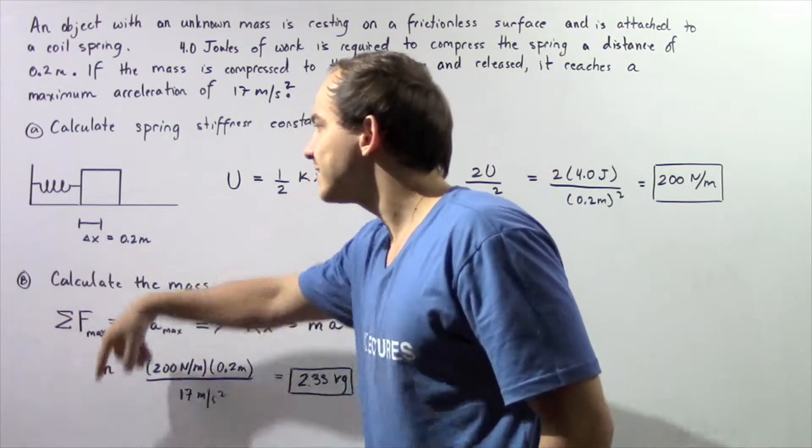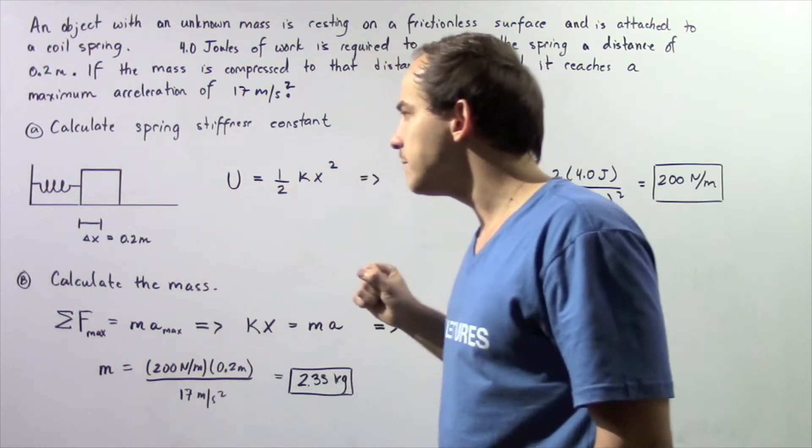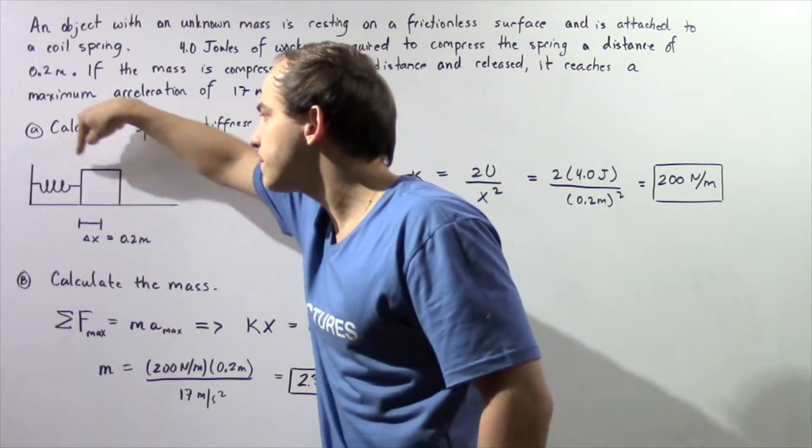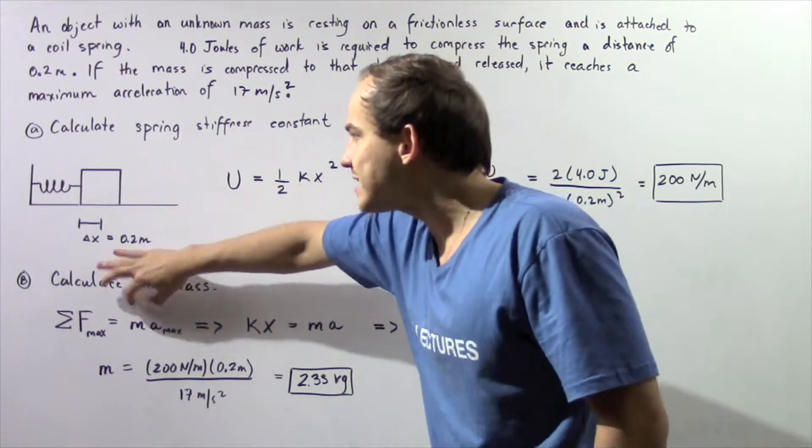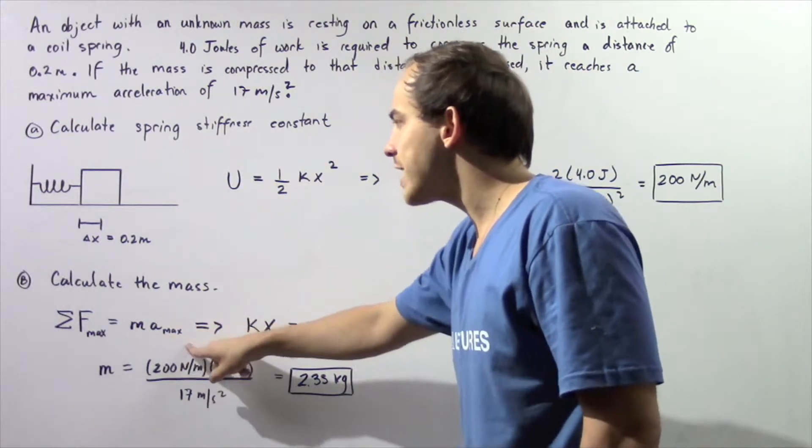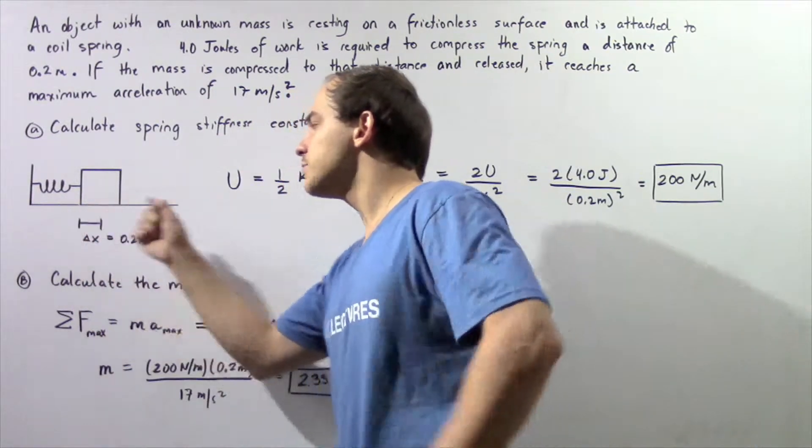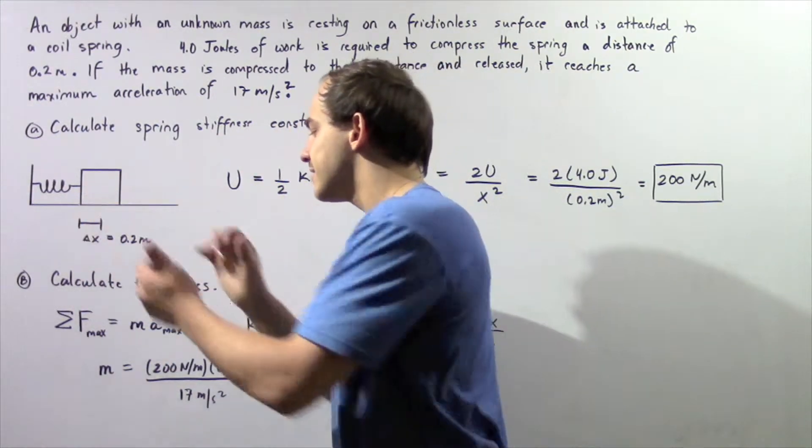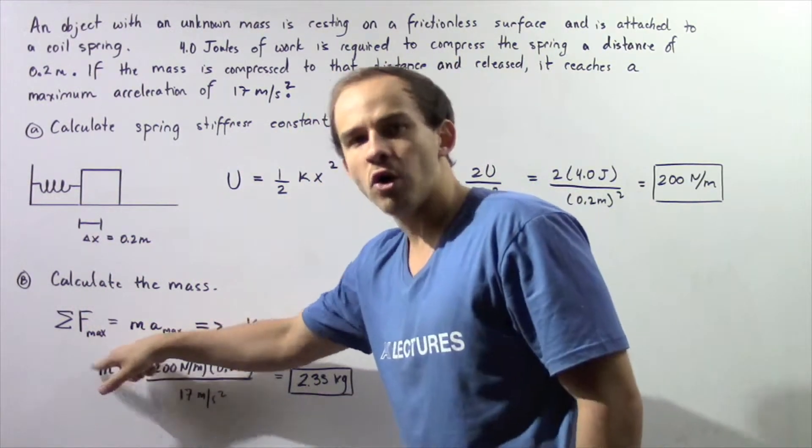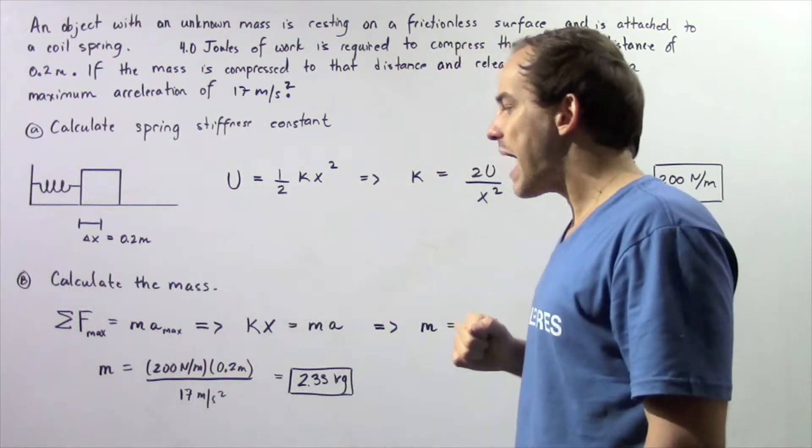The net force acting on the object, which is the maximum force due to the restoring force of the spring, is equal to mass of the object multiplied by the object's acceleration. Because the force acting on the object at that compressed distance is the maximum force, that implies our acceleration is also maximum.